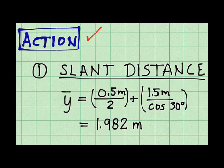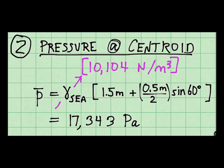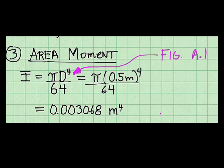Execute the plan. The slant distance is right here. The pressure at the depth of the centroid is about 17.3 kPa. To calculate area of moment, I looked up the formula in figure A.1 in the back of the book appendices.